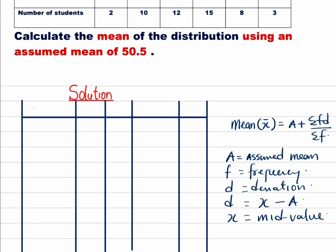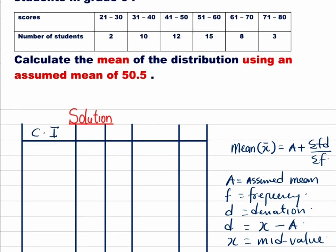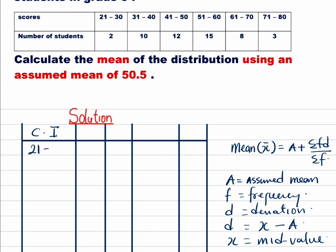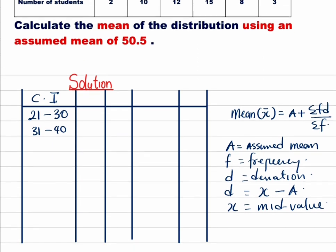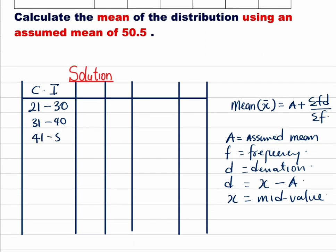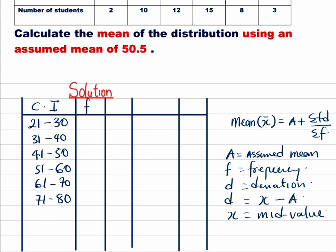Now the first thing, you have your class interval. We have it already. We have 21 to 30, 31 to 40, 41 to 50, 51 to 60, 61 to 70, then 71 to 80. Then we have our frequency f. Our frequency we have 2, we have 10, 12, 15, 8, and 3.